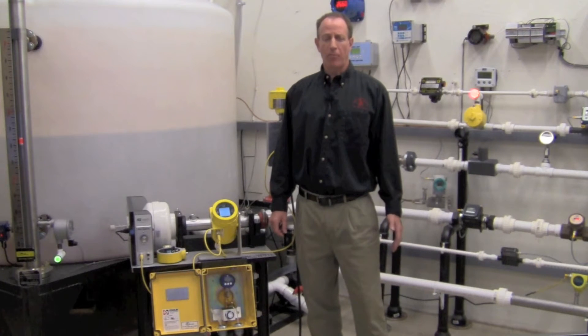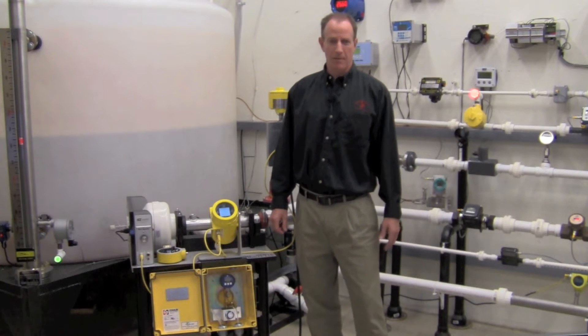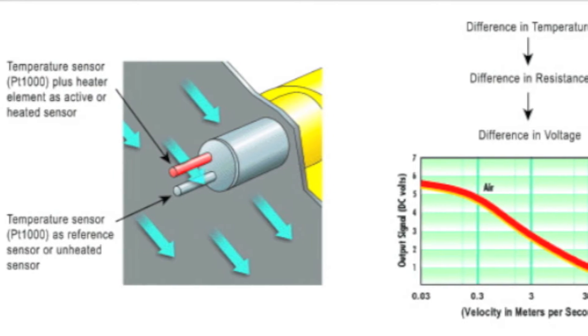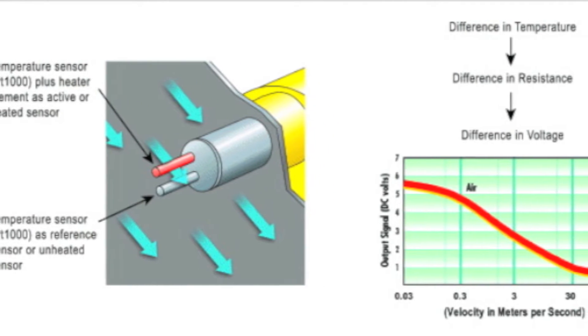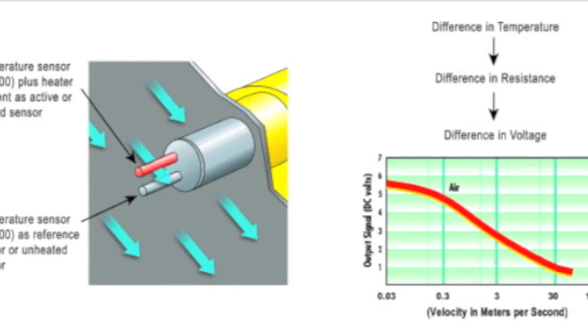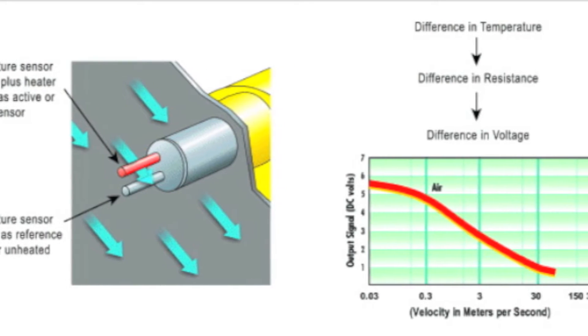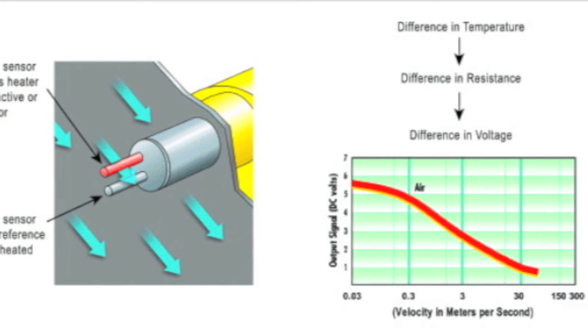The ST100 flow meters operate on the principle of thermal dispersion. The circuitry measures the temperature difference between the heated and non-heated sensors. The greater the mass flow rate, the less temperature difference between the two sensors.